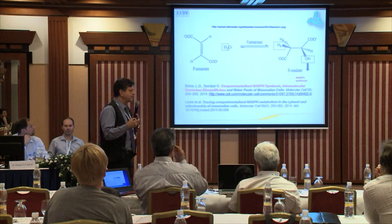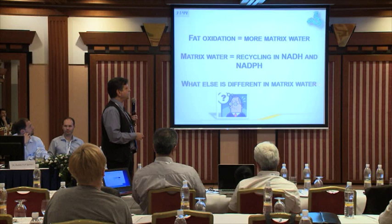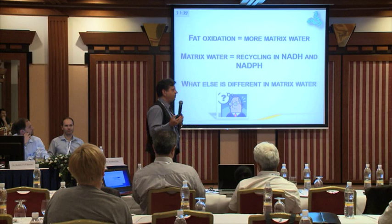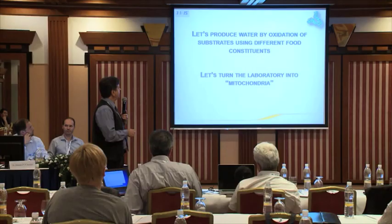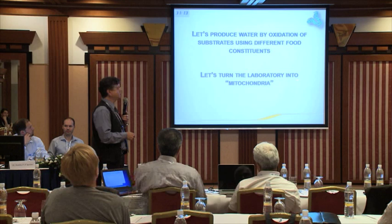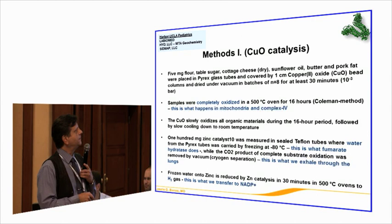It would be very interesting to understand exactly what matrix water is and why it's so particular — first, to produce it from fat, and second, why it's so important to replace water in mitochondrial substrates. I reviewed data generated by the Hungarian Academy of Sciences by Dr. Forage, and we literally turned the laboratory into a mitochondria, oxidizing substrates: flour, table sugar, cottage cheese, sunflower oil, butter, and pork fat, just to see exactly what kind of water we can produce from these substrates.